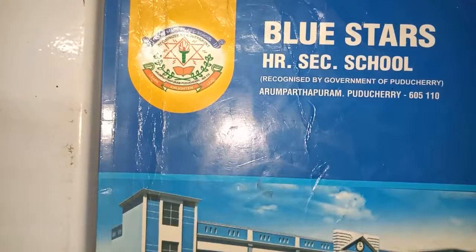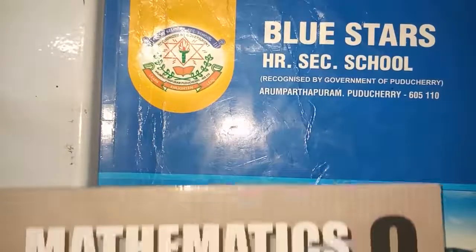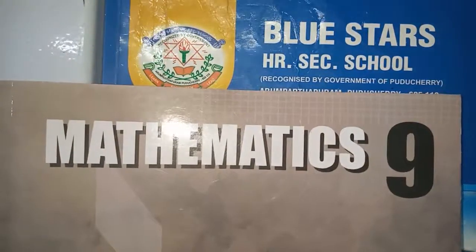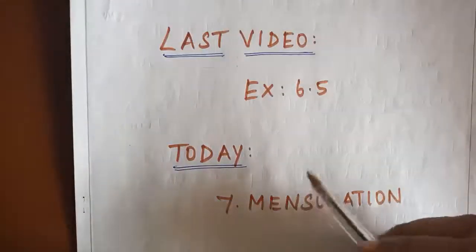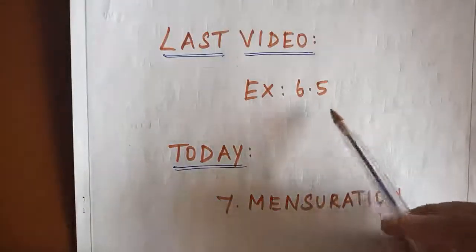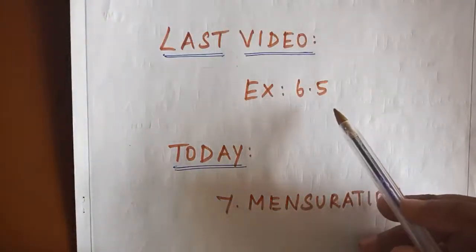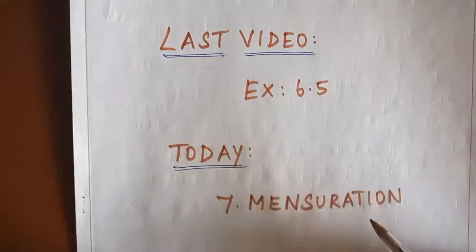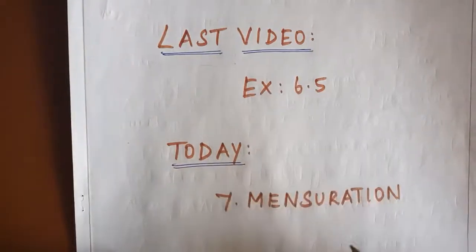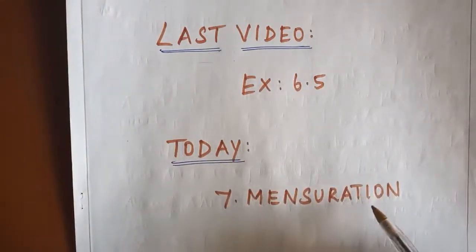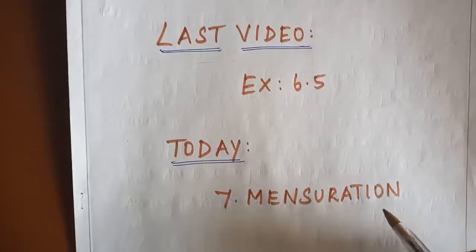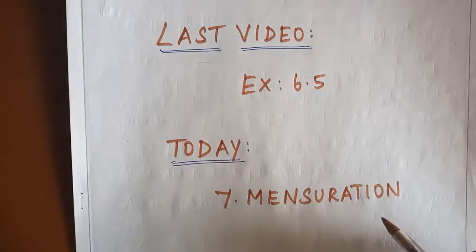Welcome to Blue Star High Secondary School Video Classes for 9th Standard Mathematics. Good morning, students. In our last video we covered Exercise 6.5. Today we are going to see a new unit — Unit 7: Mensuration. Before we go to the problems, we have to see some formulas. Let us see the formulas one by one.